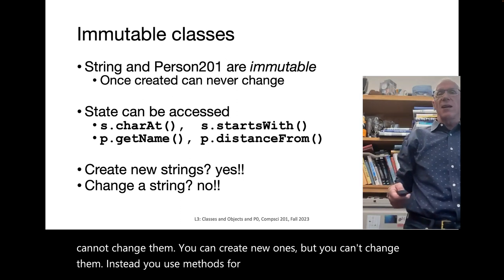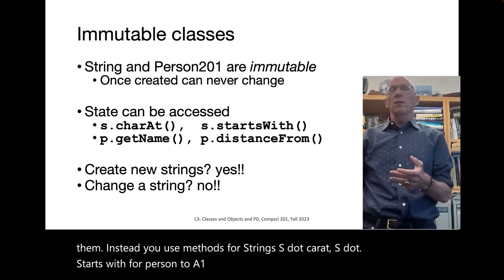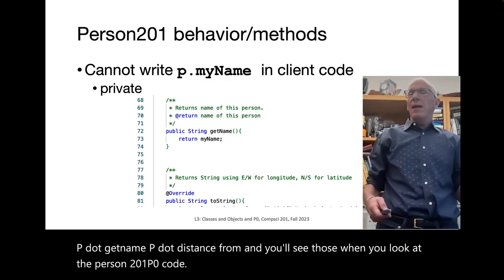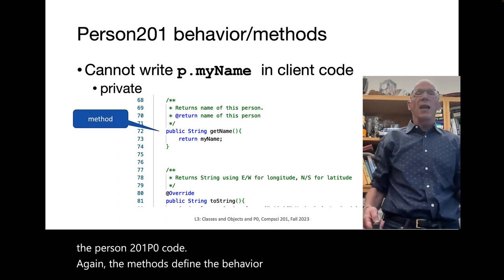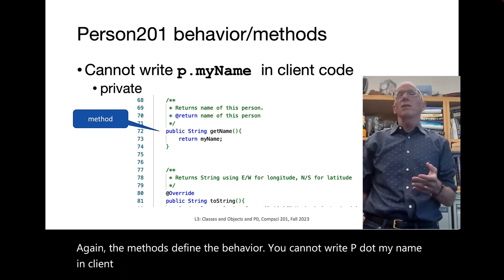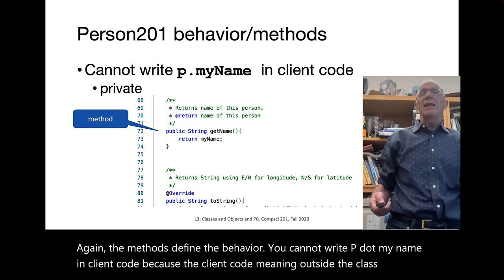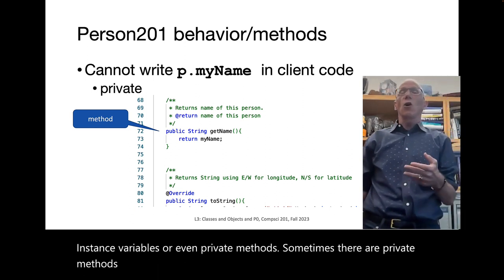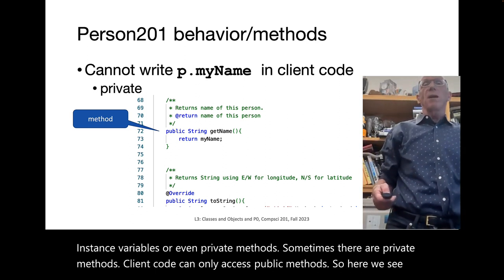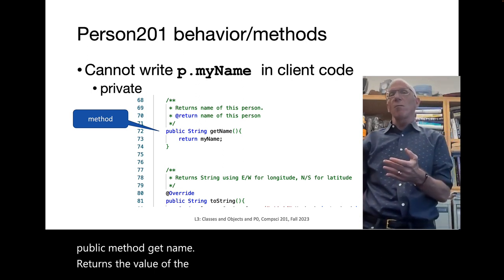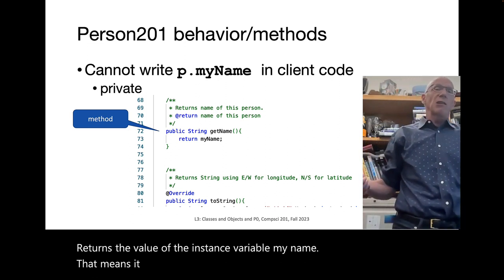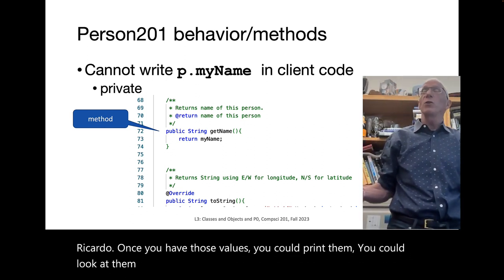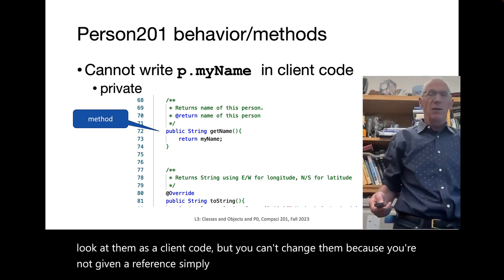Typically, you can't change the state by accessing the instance variable because they're private. You can change the state of something like ArrayList by calling a method — but for strings and Person201 objects, you cannot change them; you can only create new ones. Instead, you use methods: for strings, s.charAt(), s.startsWith(); for Person201 objects, p.getName(), p.distanceFrom().